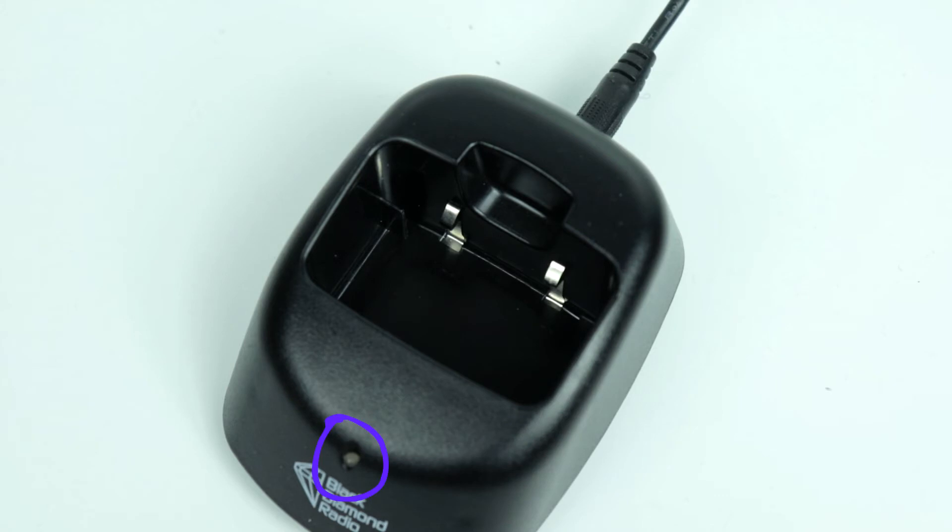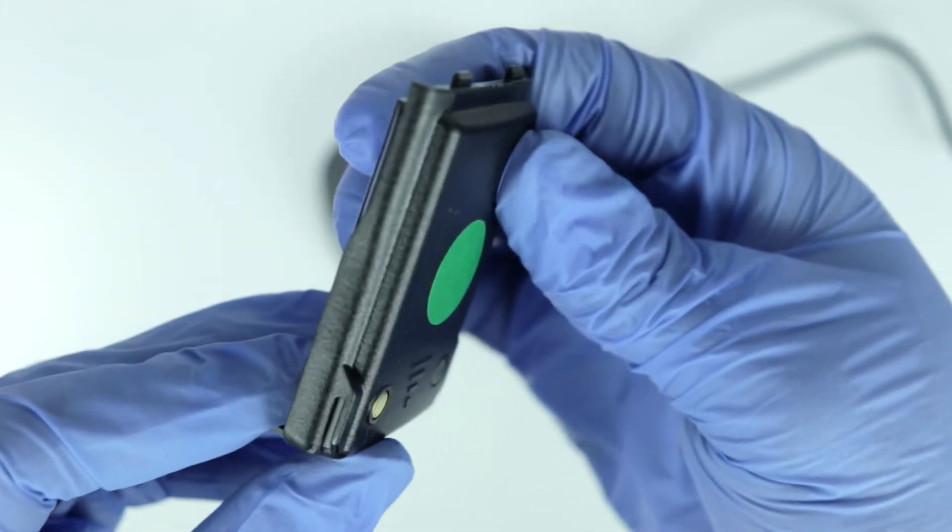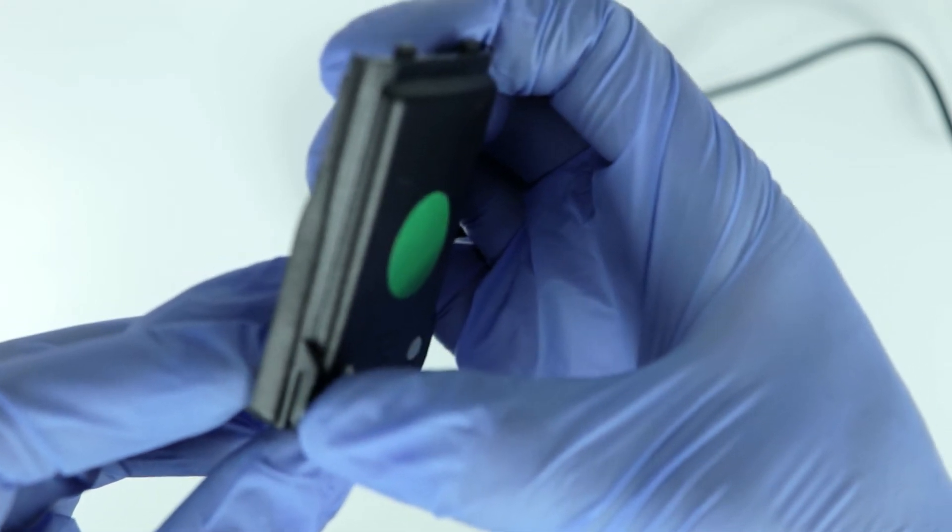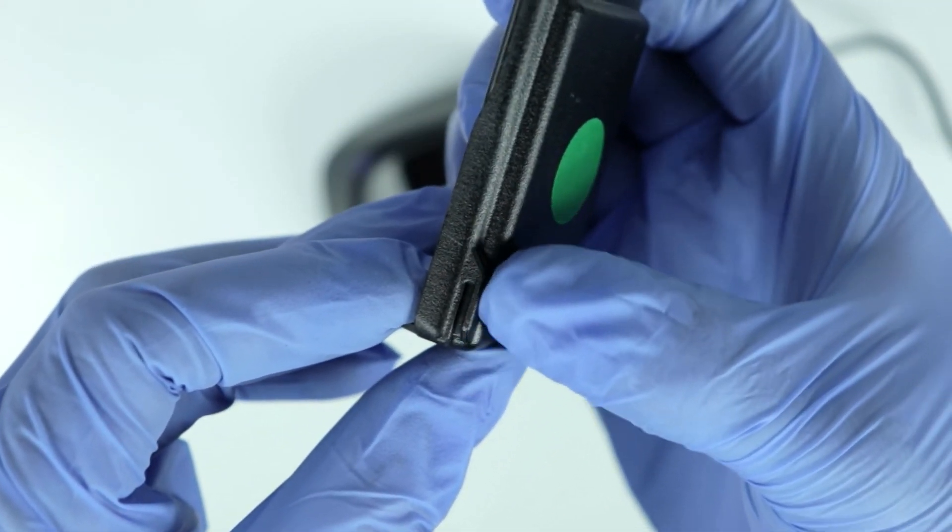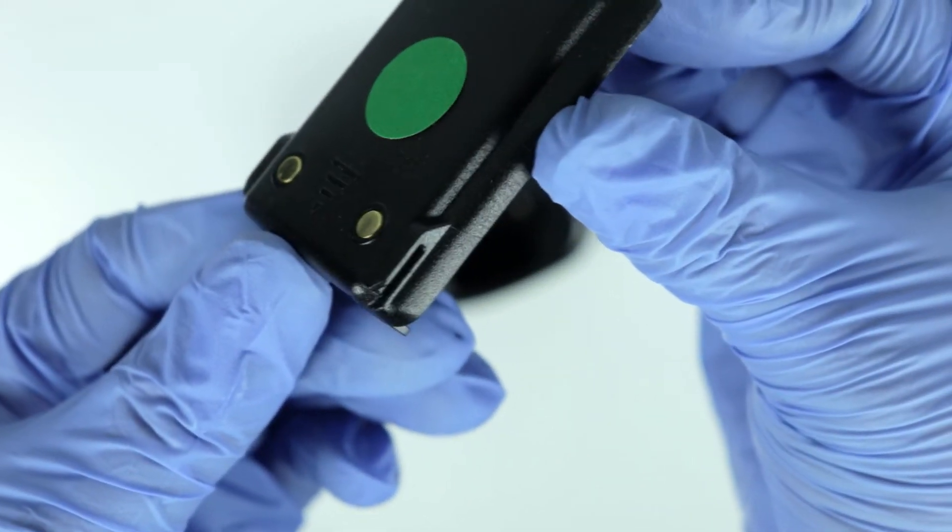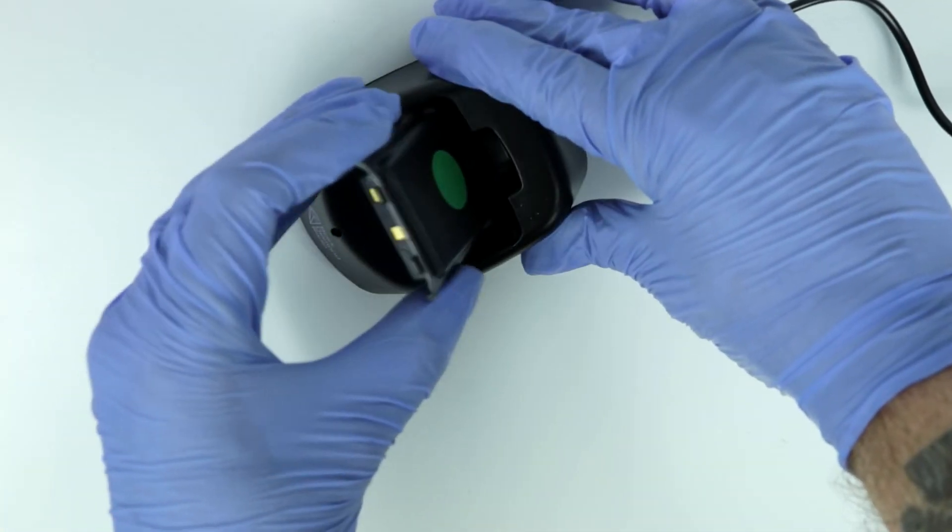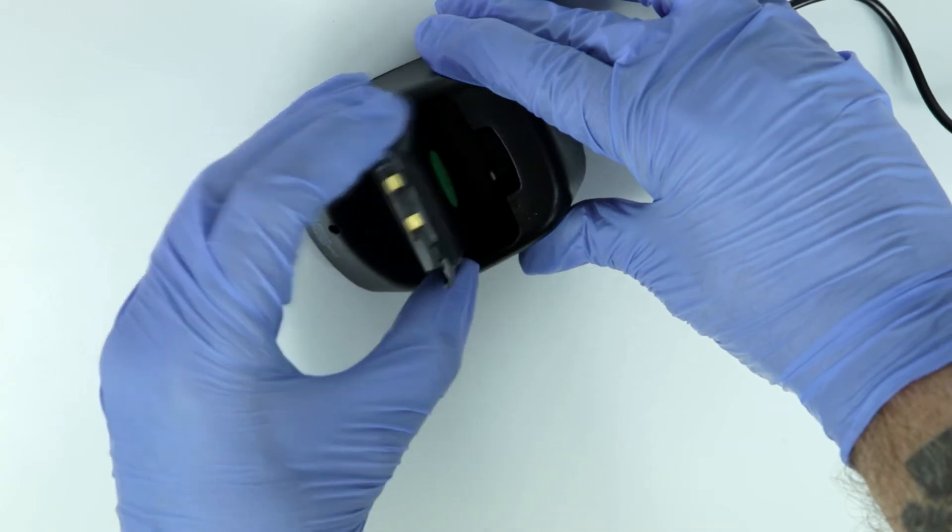You'll notice that the charger does have an LED indicator. This indicator will light red whenever the radio is charging, and it will light green to indicate that the radio is now fully charged and ready for use. Now I've got a CE240 battery here, and I want to show you there's this little slot. That's where the track goes into the battery when you put the radio into the charger. And because it's designed that way, we can put the battery directly into the charger without the radio, and it will still charge.